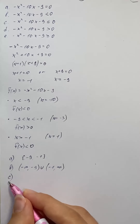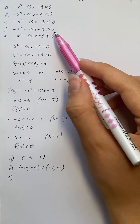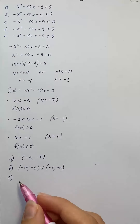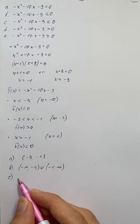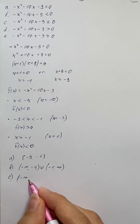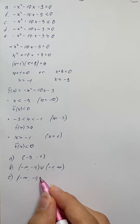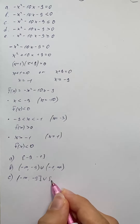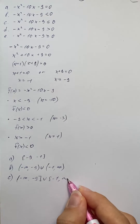For part c, the inequality is less than or equal to 0, which is similar to the previous but this time boundary points are included. So the solution set is negative infinity to negative 9 included, union negative 1 including to infinity, written with brackets.